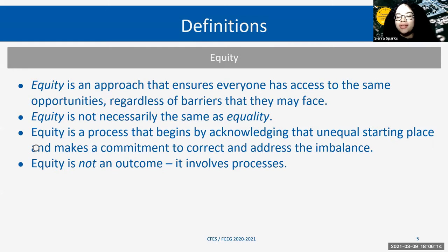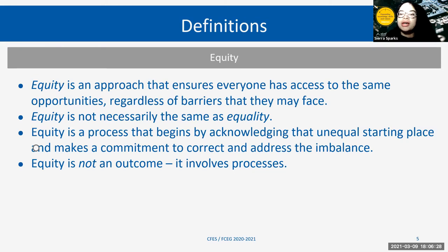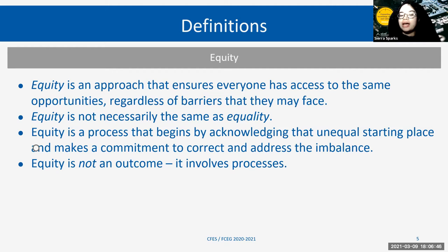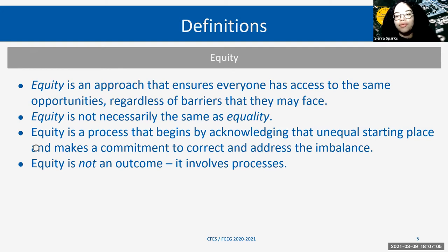Finally, the last of the EDI terms is equity. Equity is an approach that ensures that everyone has access to the same opportunities, regardless of barriers that they may face. Diversity may be achievable, but inclusion may not be fully achievable if we don't look at some of the barriers that individuals are facing, whether that be in relation to engineering studies or the engineering profession. Equity is an approach to make sure we're able to achieve inclusion and reduce the effects of those barriers.